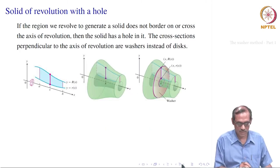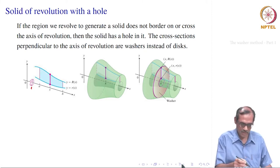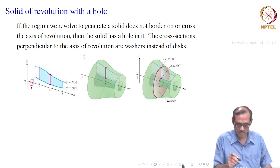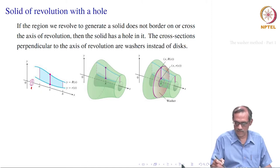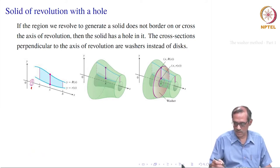Let us take an example. We have a region painted blue in the first picture, being revolved around the x-axis. When it revolves, you would not get a solid without any holes. There will be a solid with holes, as you see in the second picture. When you take a slice, that will not be a disk but a punctured one — it is an annulus. If the region we revolved does not border on or cross the axis of revolution, then the solid has a hole in it, and the cross sections perpendicular to the axis of revolution will be annular — they will be washers instead of disks.